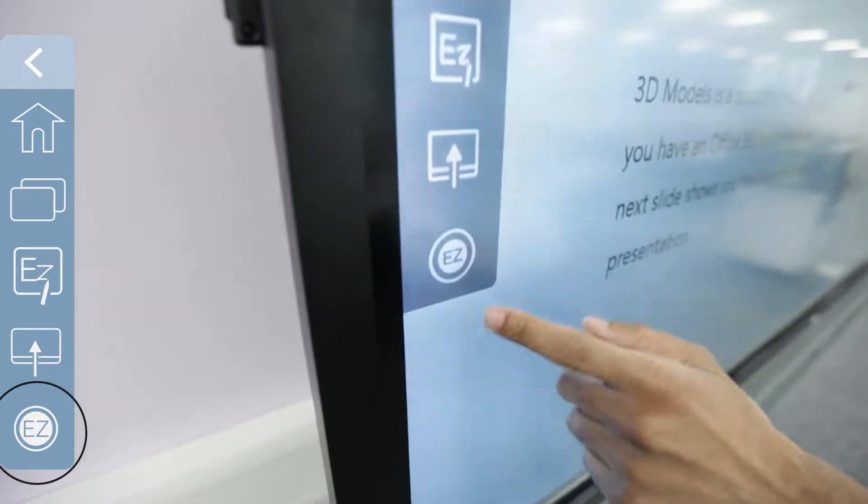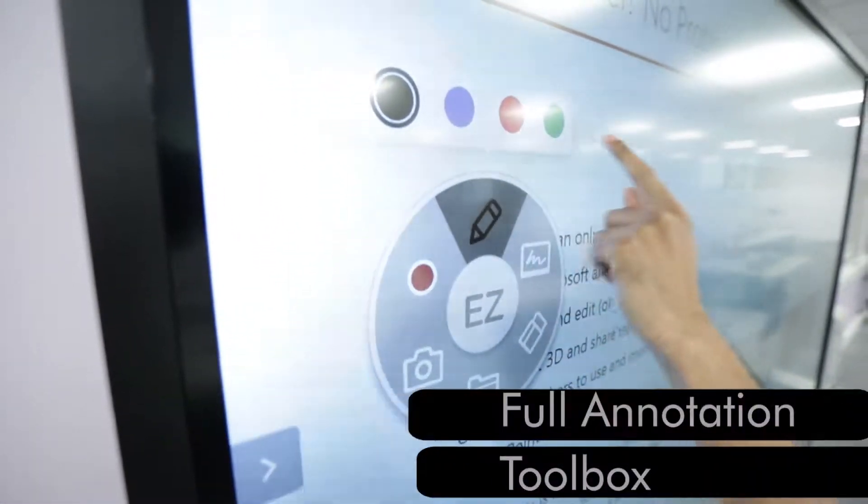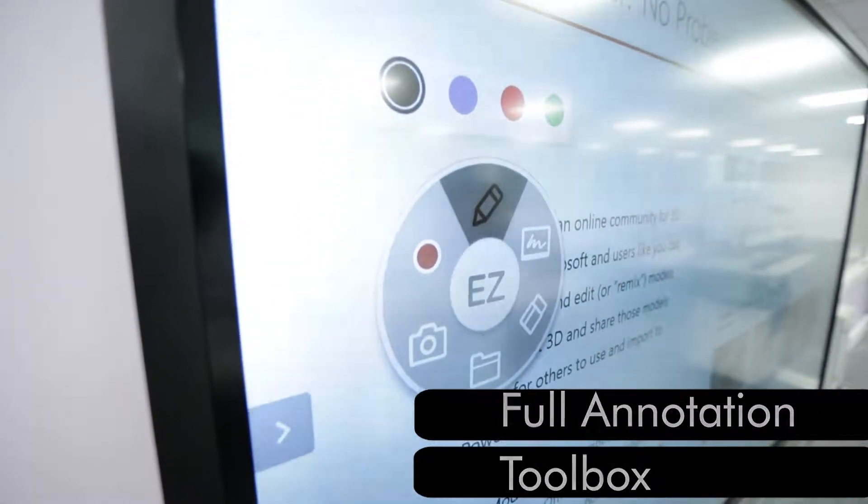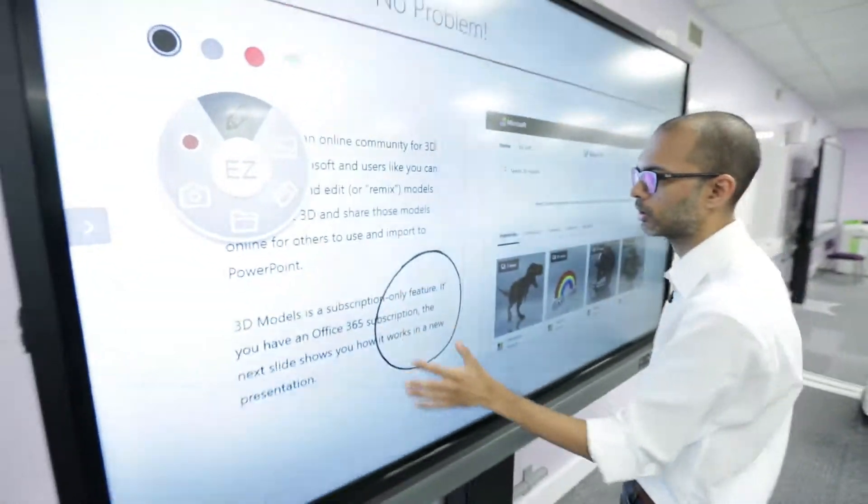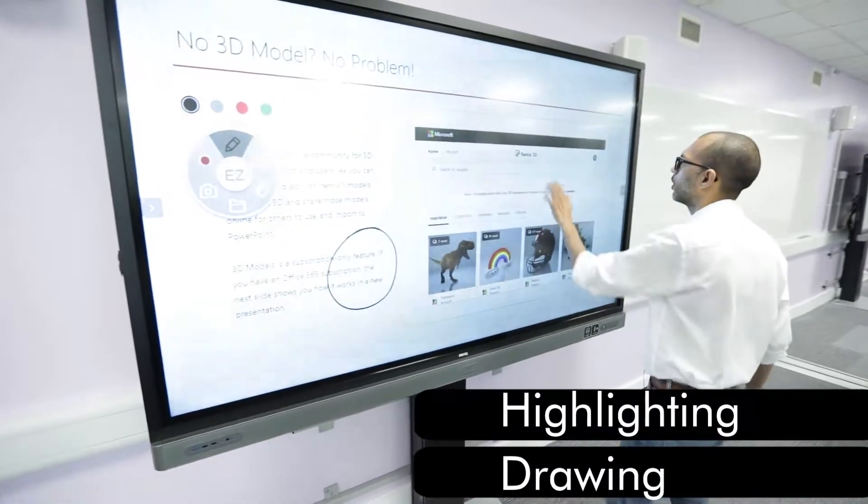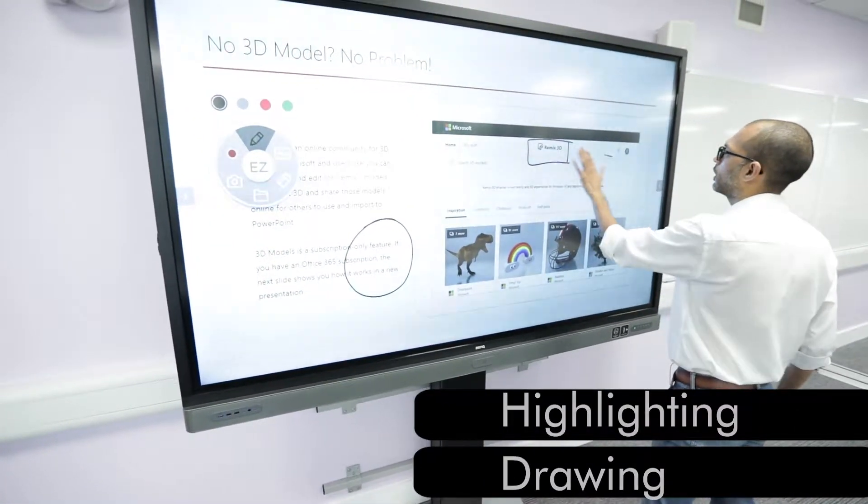If I select this, the last icon here—the round EZ—is the annotation tool. Here I have a choice of color, so if I want to use the black color, I'll just leave it on there, and I can annotate anywhere on the screen.